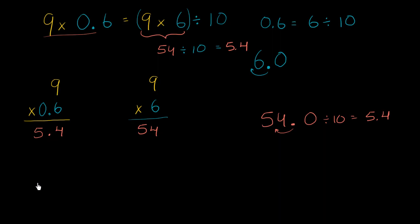Now you might see a little pattern here. Between these two numbers, I had exactly one number to the right of the decimal. When I take its product, if I ignored the decimal, I just said 9 times 6, I would have gotten 54.